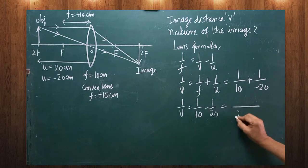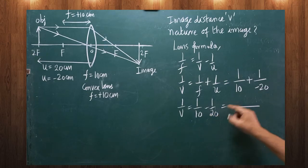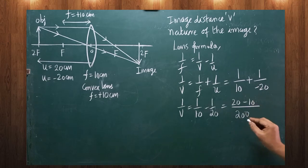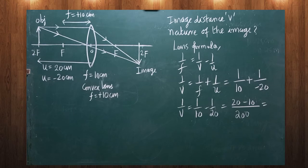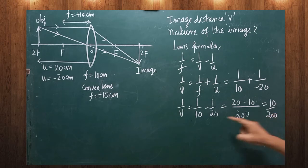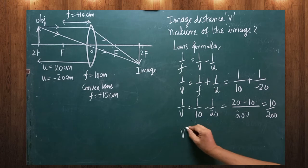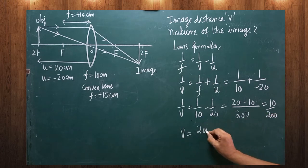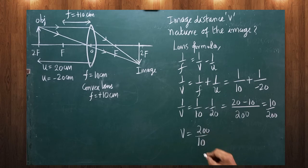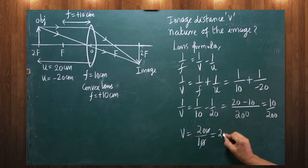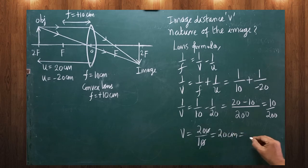Taking LCM of 10 and 20, which is 200: 200 divided by 10 equals 20, and 200 divided by 20 equals 10. So 1 by v equals 20 minus 10 divided by 200, which equals 10 by 200. Reciprocating, v equals 200 divided by 10. Cancelling, the answer is 20 centimeters.